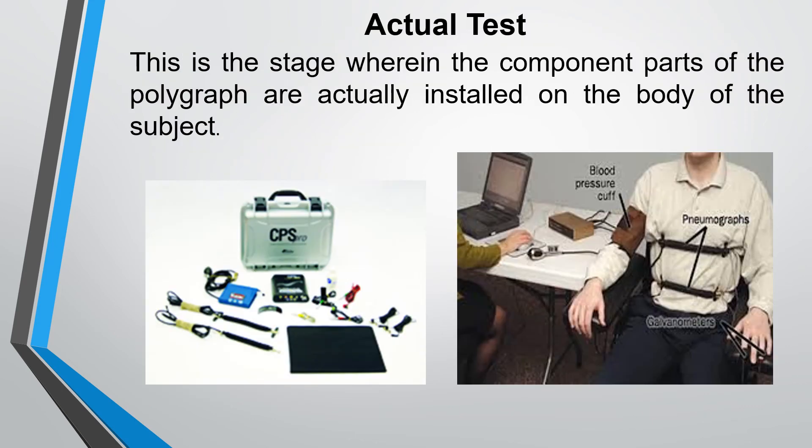The actual test is the stage wherein the component parts of the polygraph are actually installed on the body of the subject. The subject's physiological responses are recorded as the subject answers a set of questions reviewed earlier.